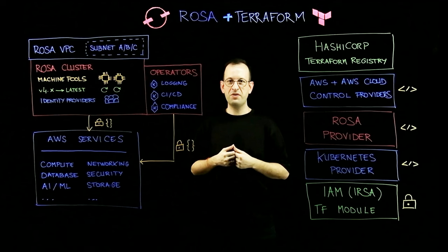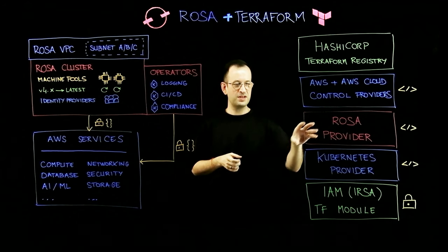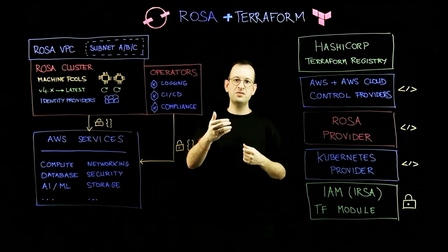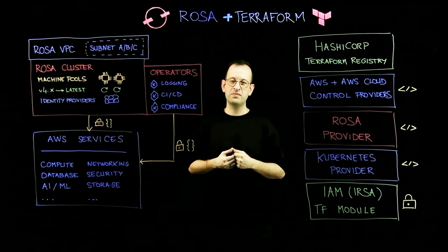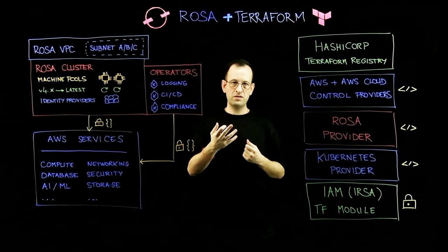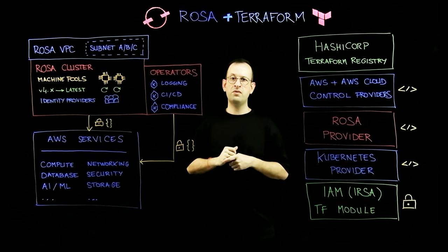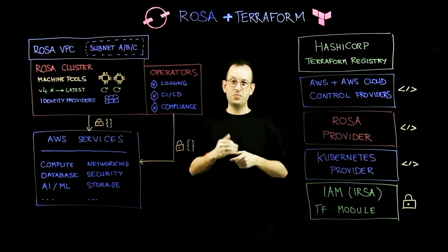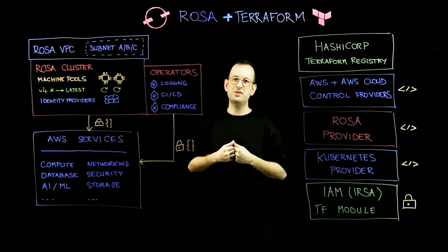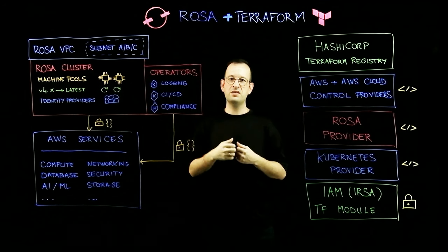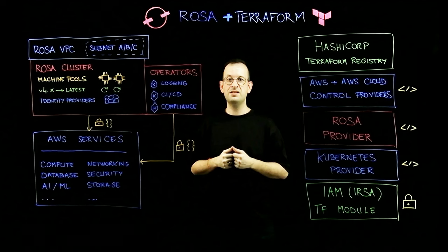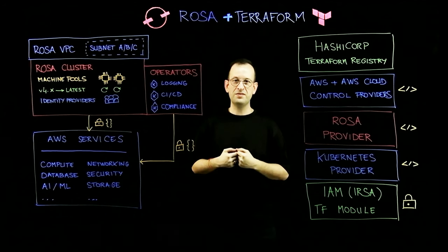The next step is to look at how we create our cluster. To do that we start with the ROSA provider, developed by the Red Hat Cloud Services team. It allows you to define all the attributes necessary for your cluster — give it a name, define a starting version, and choose whether your cluster runs on a single or multiple availability zones. Post-cluster creation, you can also use the ROSA provider to add capacity through machine pools, describing one or multiple machine pools to add Amazon EC2 instances to your worker nodes to run more applications.